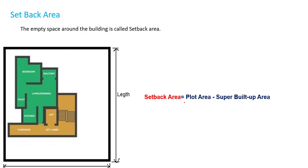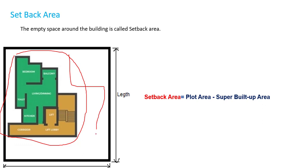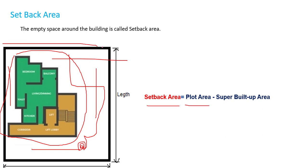The next term is setback area. The empty space around the building is called setback area. This is our building, and this empty space around it is called setback area. The setback area equals total plot area minus super built-up area.